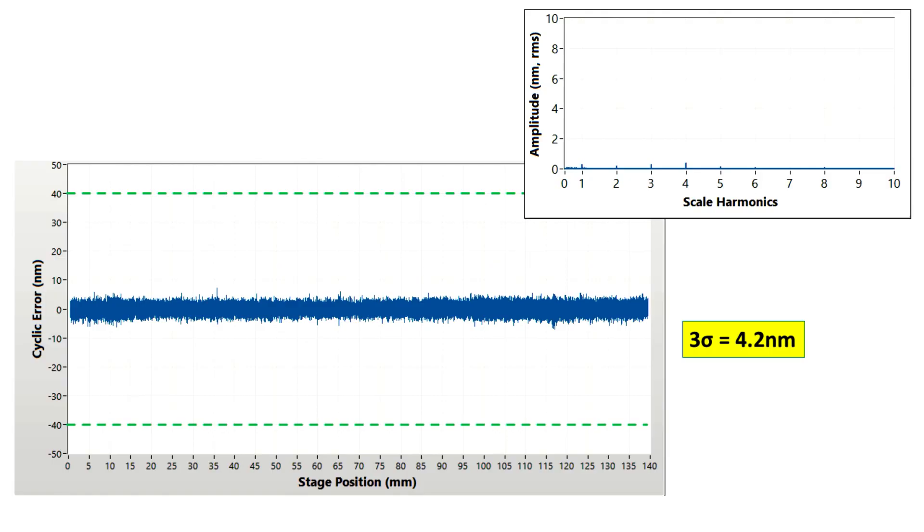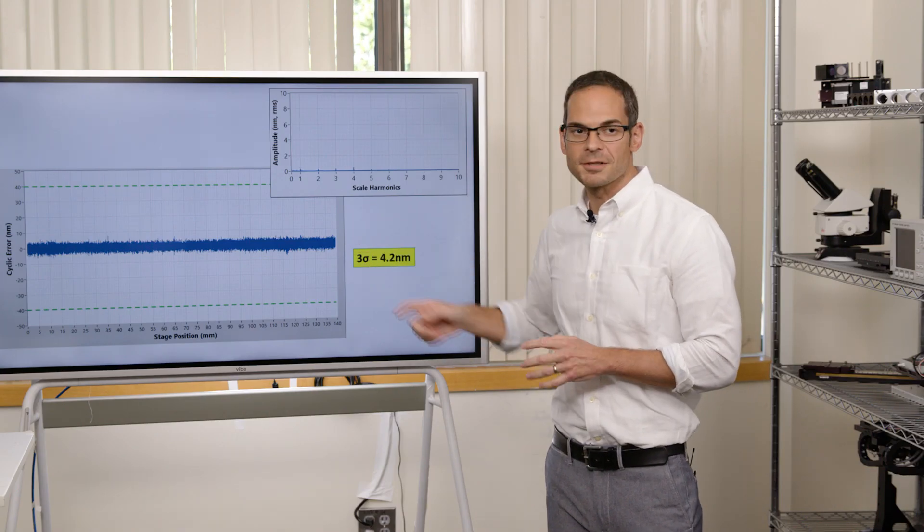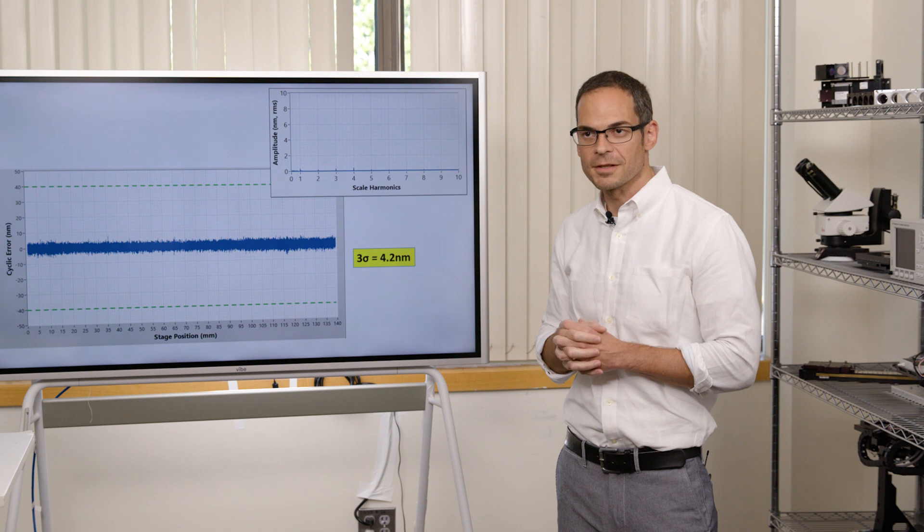So this is what good looks like. This is another stage from Dover Motion, where again, we've taken a laser interferometer, triggered from our hardware using top, and measured the inaccuracy of the encoder, the cyclic error specifically.